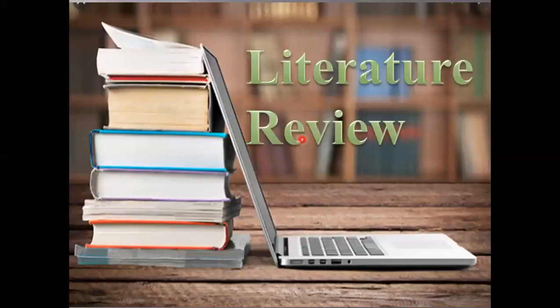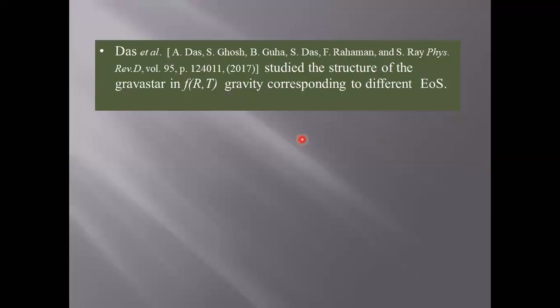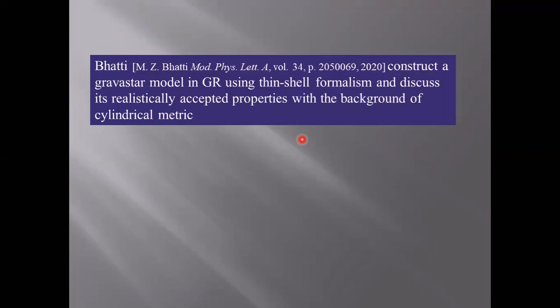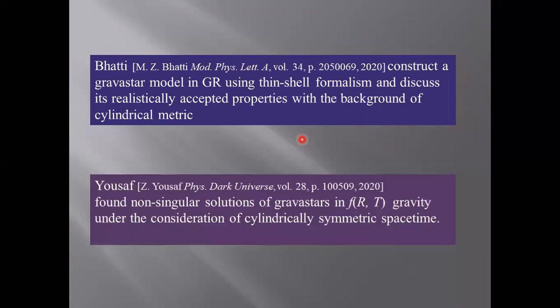Literature review: Mottola studied the structure of the gravastar in f(R,T) gravity corresponding to different equations of state. He demonstrated the effect of electromagnetic field on the formation of a gravastar in f(R,T) gravity. Waseem described the modeling of the gravastar with the help of conformal motion. Bhatti constructed a gravastar model using thin shell formalism and discussed some properties under the cylindrical metric. Youssef found a non-zero solution of gravastar in f(R,T) gravity under the consideration of cylindrical asymmetric space-time.